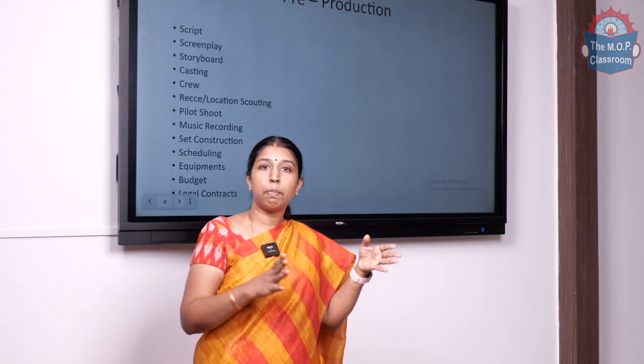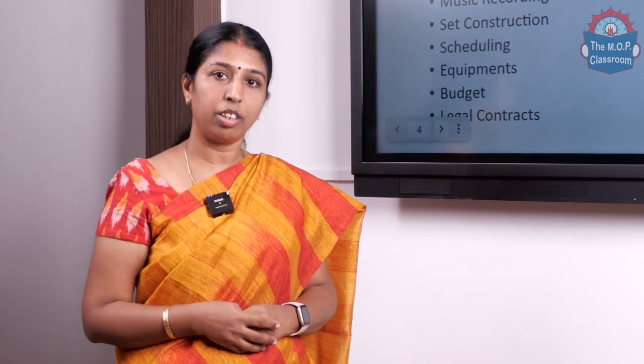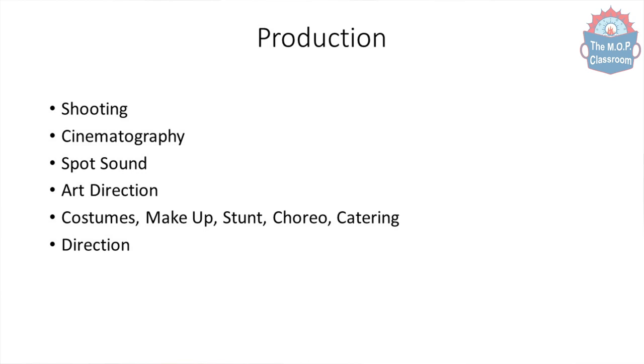Now that everything is planned and set after pre-production, we go into the next stage of film making — the production stage. The production stage is one of the most important stages because this is where a lot of money and the producer's finances get spent. Once the shooting process begins, it is very difficult to call off, postpone, or cancel the shoot because it involves a lot of people, money, and equipment coordinated in one place at one time. The principal cinematography or shooting of the film takes place during the production stage.